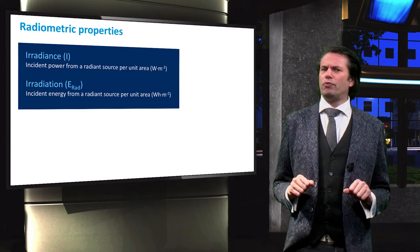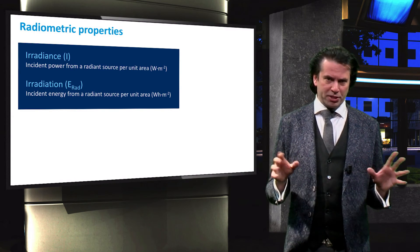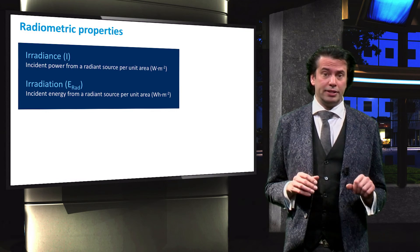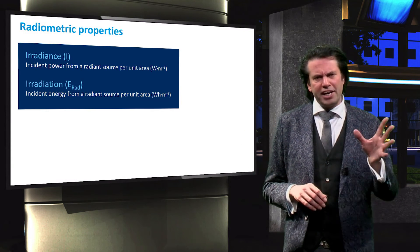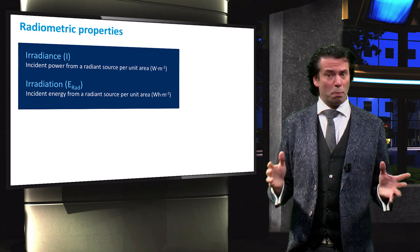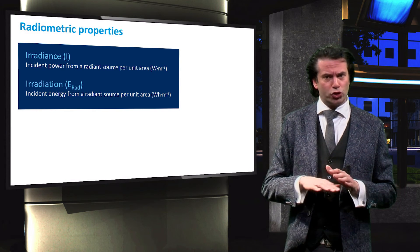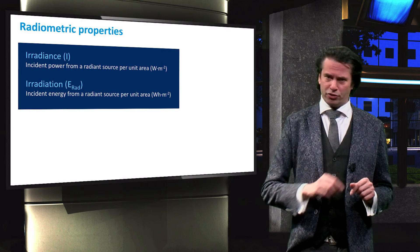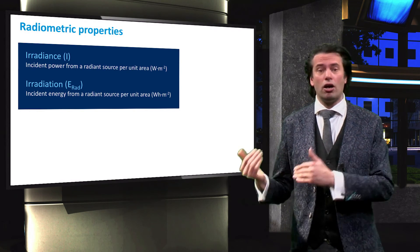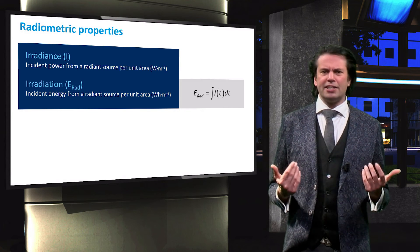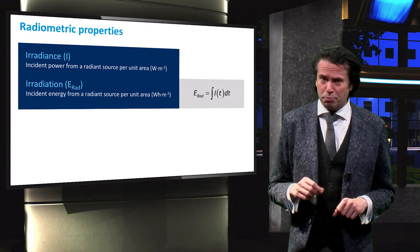First, we will discuss some radiometric properties of incident light, namely irradiance and irradiation. The irradiance is defined as the total power density incident on a surface from a radiant source. The irradiation is the total energy density incident on a surface. Since the power can be defined as energy per unit time, the irradiation can be obtained by integrating the irradiation over a certain time interval.